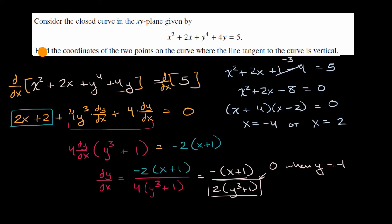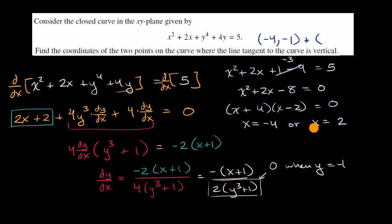To answer the question — find the coordinates of the two points on the curve where the tangent line is vertical — the answer is the points negative four, negative one and two, negative one. And we're done.